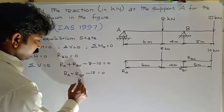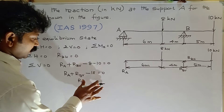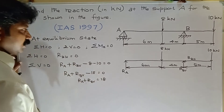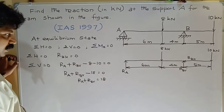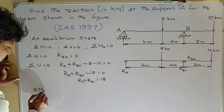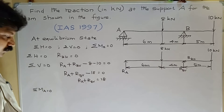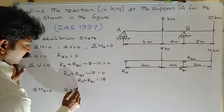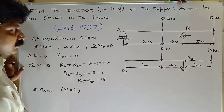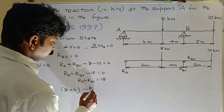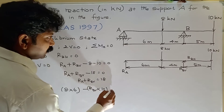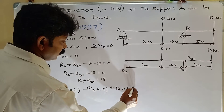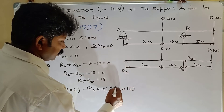From that, RA plus RB_V equal to 18. Then third condition, sigma MA equal to zero: moment of all the forces about point A equals zero. So 8 into 6 clockwise direction, plus minus RB_V into 10, plus 10 into 5 equal to zero.